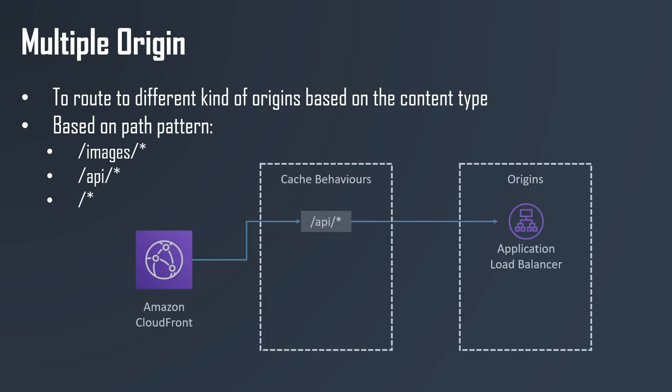For example, if you have the /api/* path, you can say that you need to have a response from the origin being your application load balancer. But in case anything else is requested — maybe everything else is static content — then you should get that content out of your S3 buckets. So we have defined multiple origins based on the path in Amazon CloudFront.